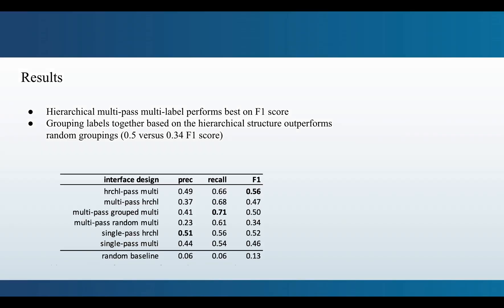In raw comparisons we see that performing hierarchical passes led to the best trade-off between precision and recall with the crowdsource workers achieving an F1 score of about 0.56. Note that these are relatively low values of precision and recall just one indication of how difficult this task is and why it's so important to investigate these interface designs against one another.